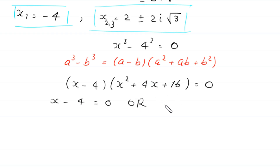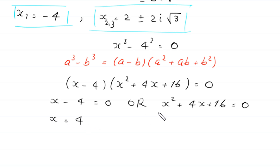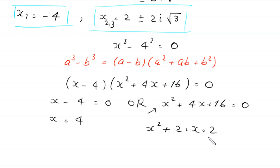From here, either x minus 4 equals 0, giving x equals 4, or x squared plus 4x plus 16 equals 0. For the quadratic, we rewrite 4x as 2 times x times 2. To make it a perfect square we add 2 squared, and to balance this we subtract 4. The plus 16 remains.